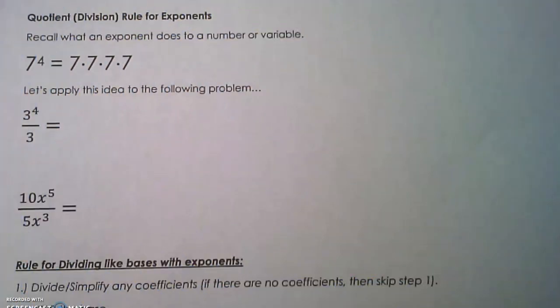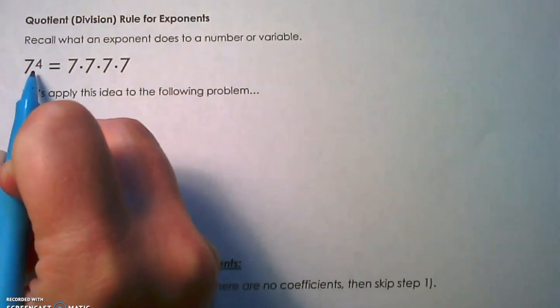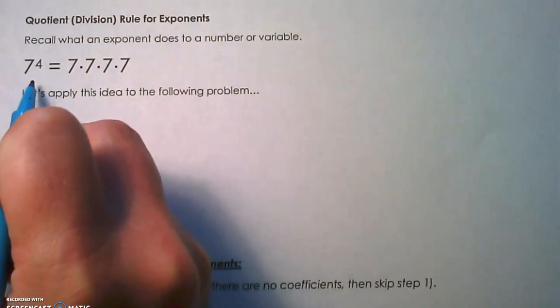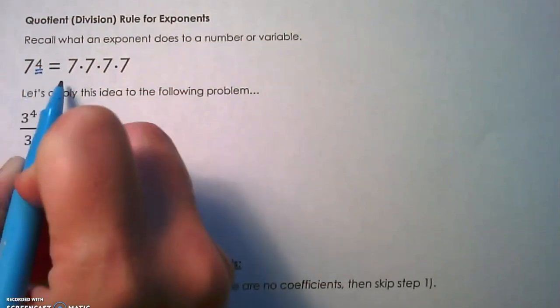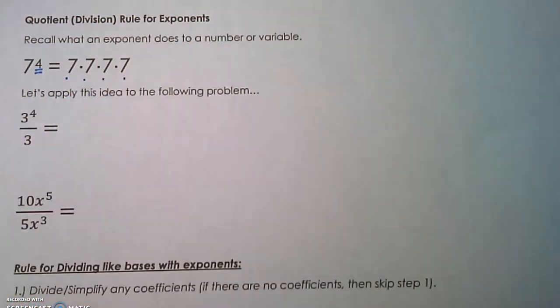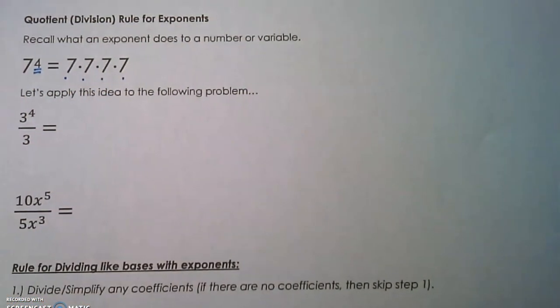In this video, I'm going to be teaching you how to use the quotient or division rule for exponents. Keep in mind that an exponent tells the base how many times to be used as a factor. My exponent of 4 tells 7 to be used as a factor four times. So we're going to use that idea when we are working through these first two examples.